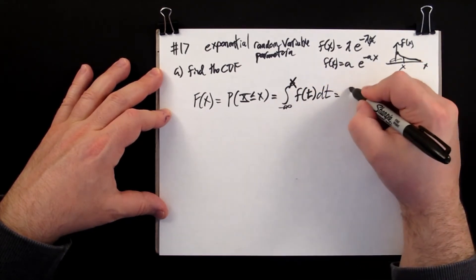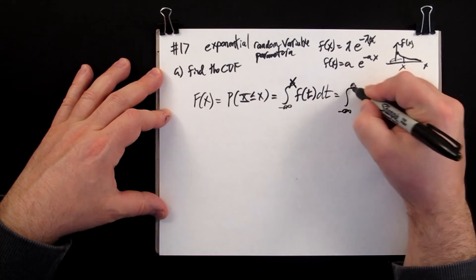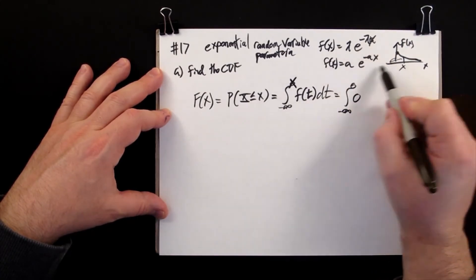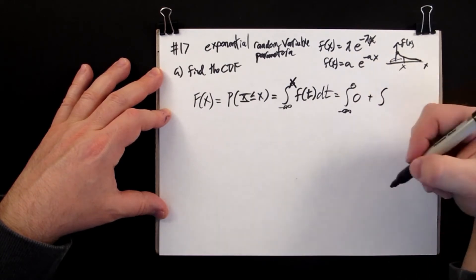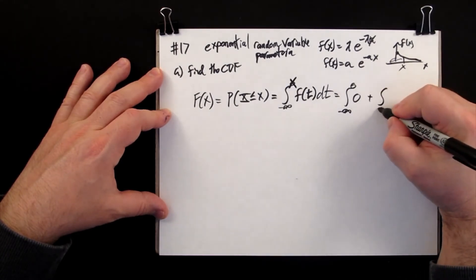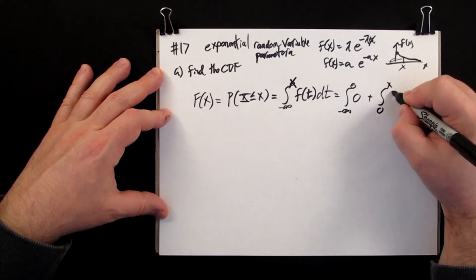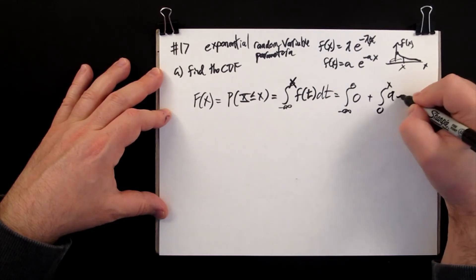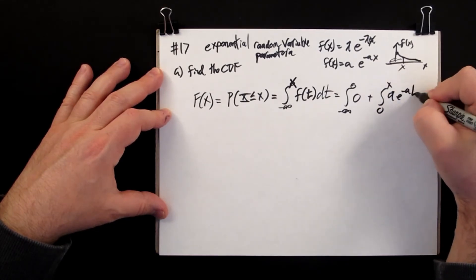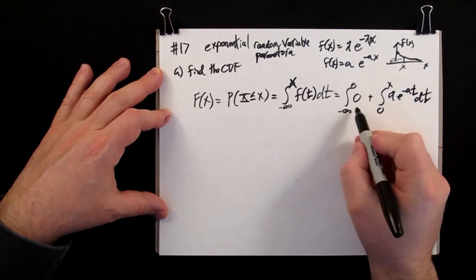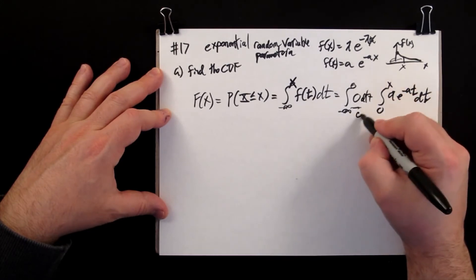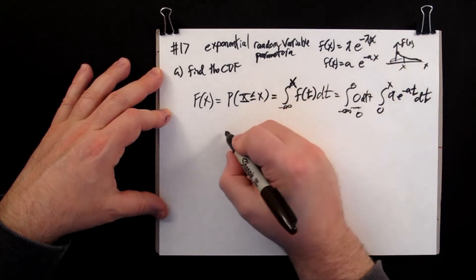What do we have for our formula? We have from minus infinity to zero—that's outside of below zero—and then it starts to turn on at zero. So we go from zero to x of a e to the minus a t dt. This one is zero, and so this is the result we have to worry about.